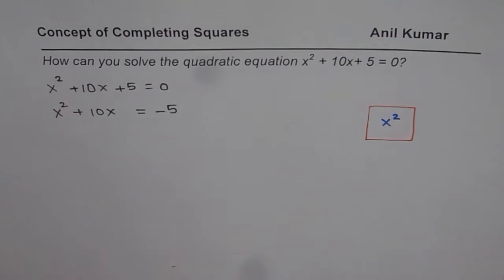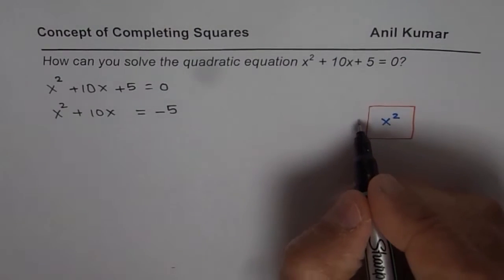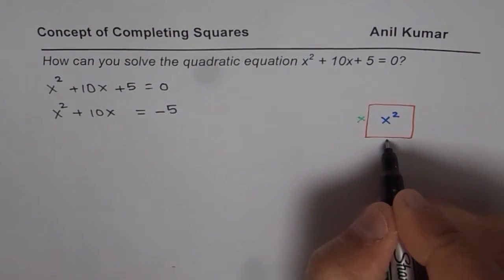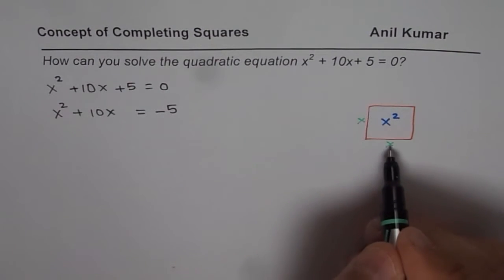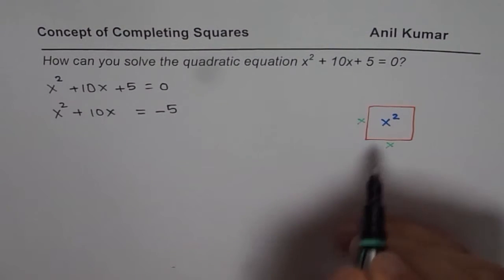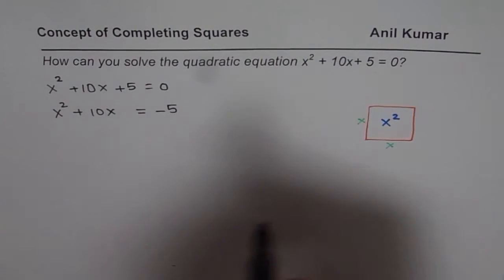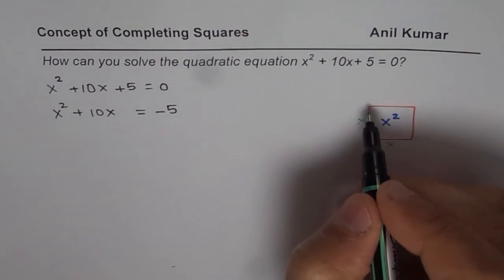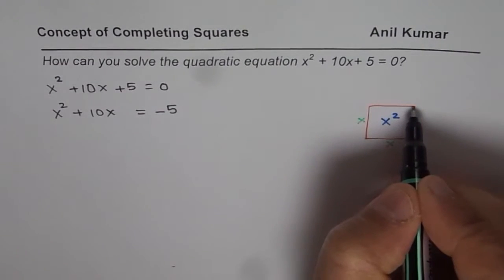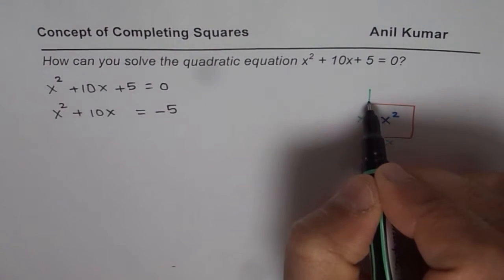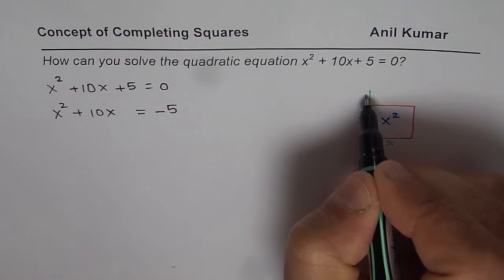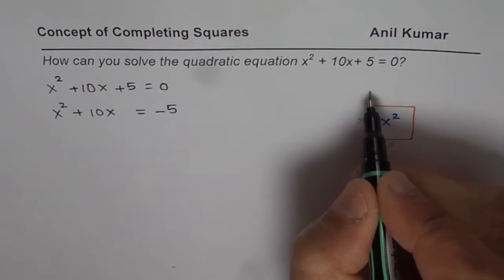Now we have 10x. Since this is x², each side is x units—x times x gives me an area of x². For 10x, I could make a rectangle with width x and let's say this number 5.